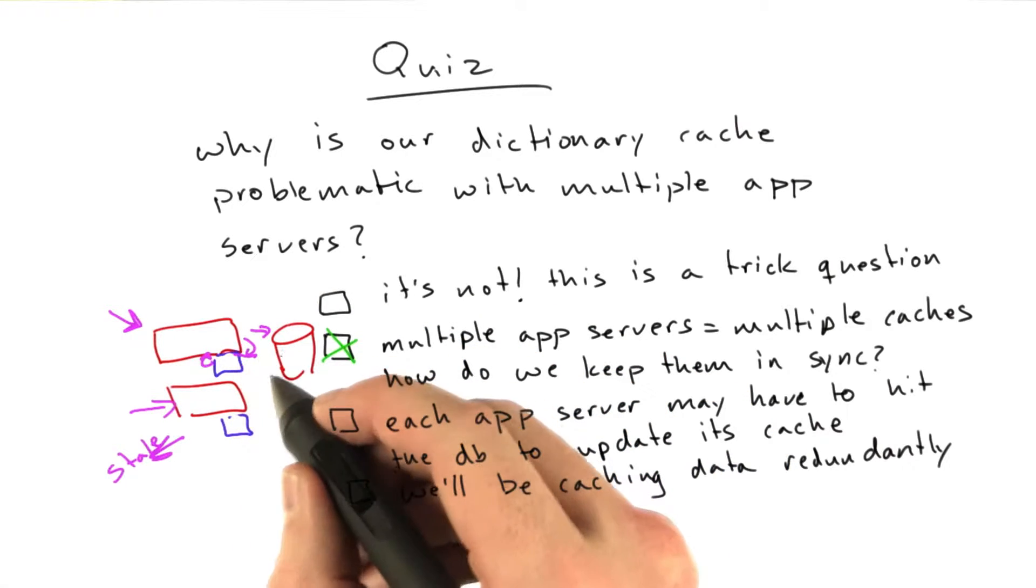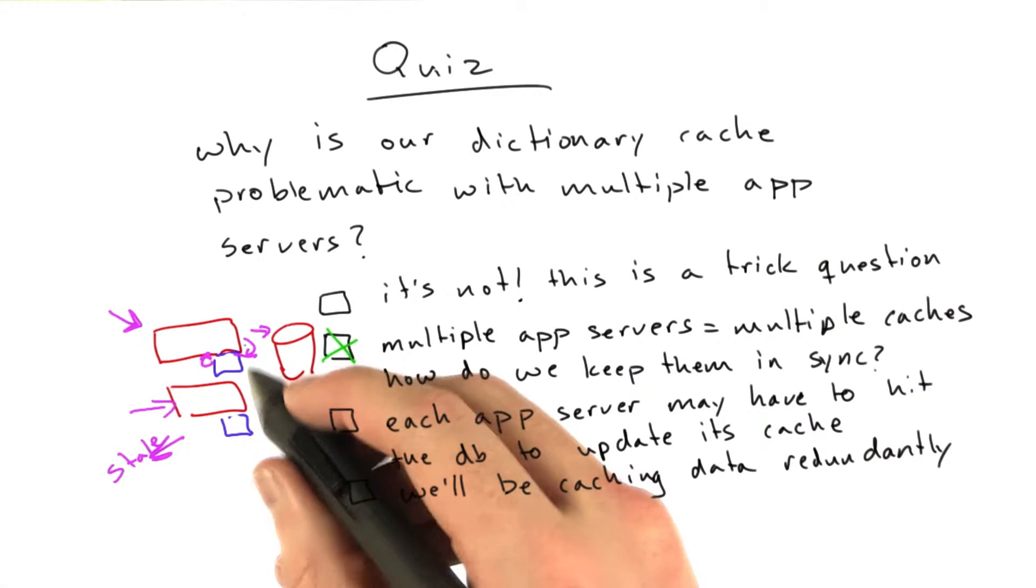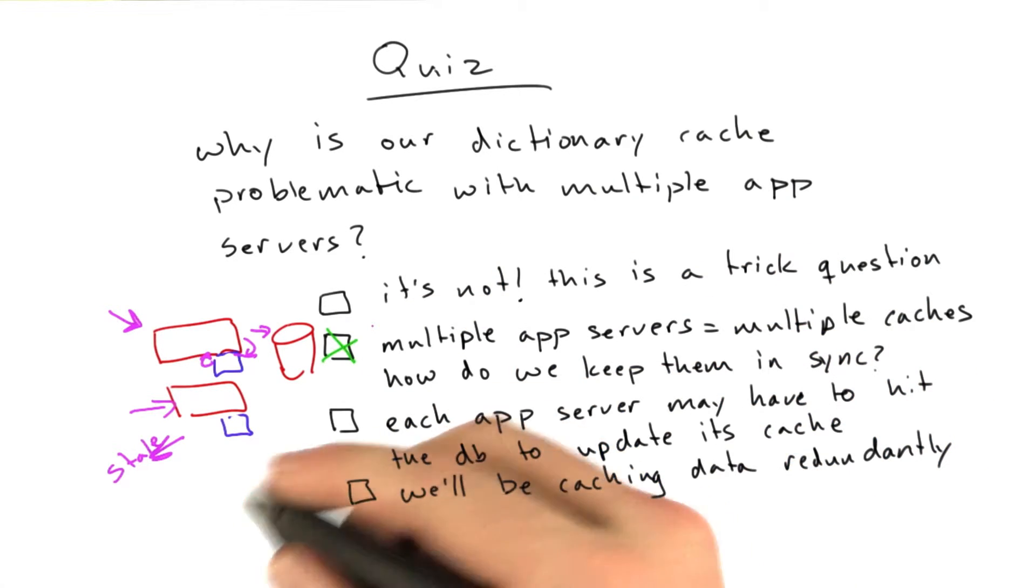This is similar to the cache stampede problem, where each of these app servers is going to want to update its cache, which means it's going to have to hit the database. So that's problematic as well.